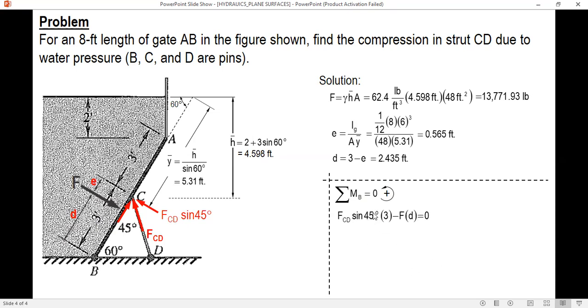F sub CD sine 45 times distance 3 minus hydrostatic force F times distance d. And substituting the values of F and d, we now have this equation.